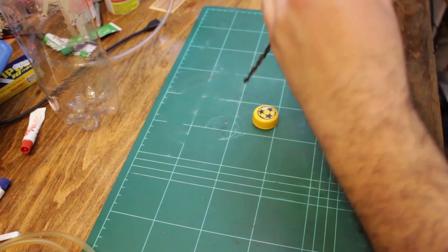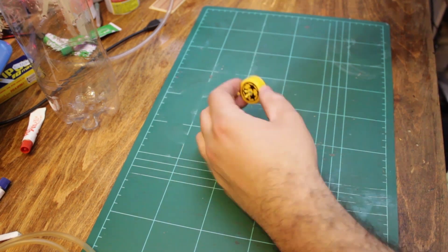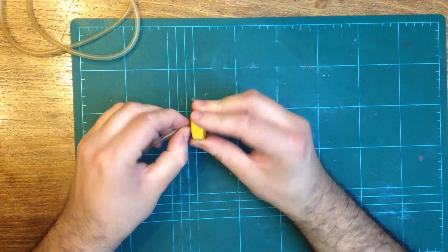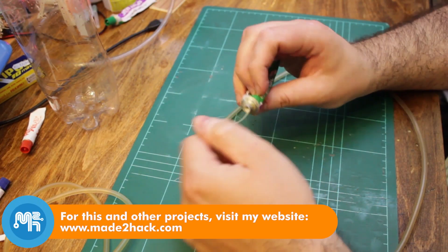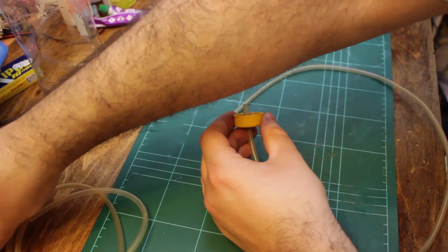With the first generator complete, it was time to turn my attention to the second generator. This one was made using an old fizzy drinks bottle that I salvaged. If you want to make this type of generator, make sure to use a bottle which held a fizzy drink and not just a regular bottle of water or juice. It needs to be able to maintain some pressure.